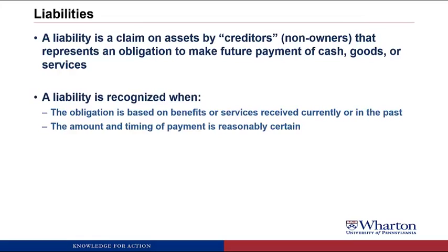Just like assets, there are two criteria for when we recognize a liability. First, the obligation is based on benefits or services received currently or in the past. And second, the amount and timing of the payment is reasonably certain. These are essentially the same two criteria as for assets. For example, if we borrow money from a bank, we have an obligation to repay the bank based on receiving the benefit of the money. The amount and timing of payment is reasonably certain, so it would be a liability called notes payable or mortgage payable.